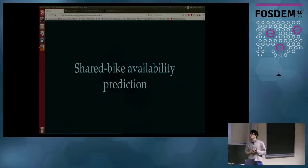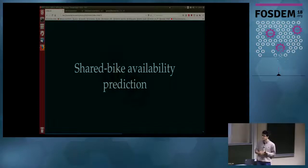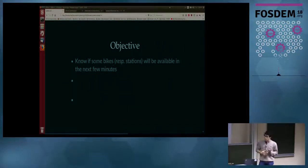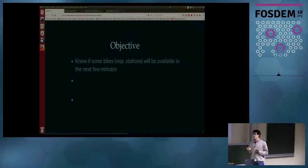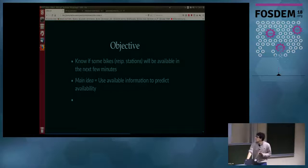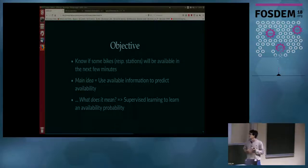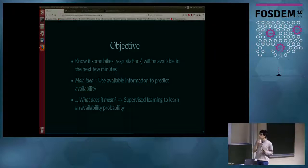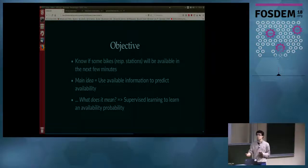After that, we tried to predict the availability of bikes at a shared bike station. In such situations we know the date, the time of day, and how many bikes are at the station. The question we want to answer is: how many bikes will be at the station in the next hour? We use supervised learning to use the available information to predict new information, and we can verify our predictions because we have the data.